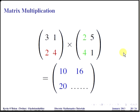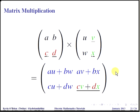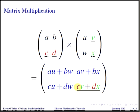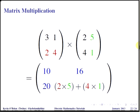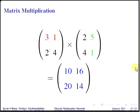Finally, for the last element of the resultant matrix, we are going to use the second row and the second column. We compute the product of each pair and add them all together. The first pair is C and V, the second pair is D and X, so C times V plus D times X. Using our values, that's 2 times 5 plus 4 times 1, and that gives us 14. So the resultant matrix of the multiplication of those two matrices is 10, 16, 20, and 14.